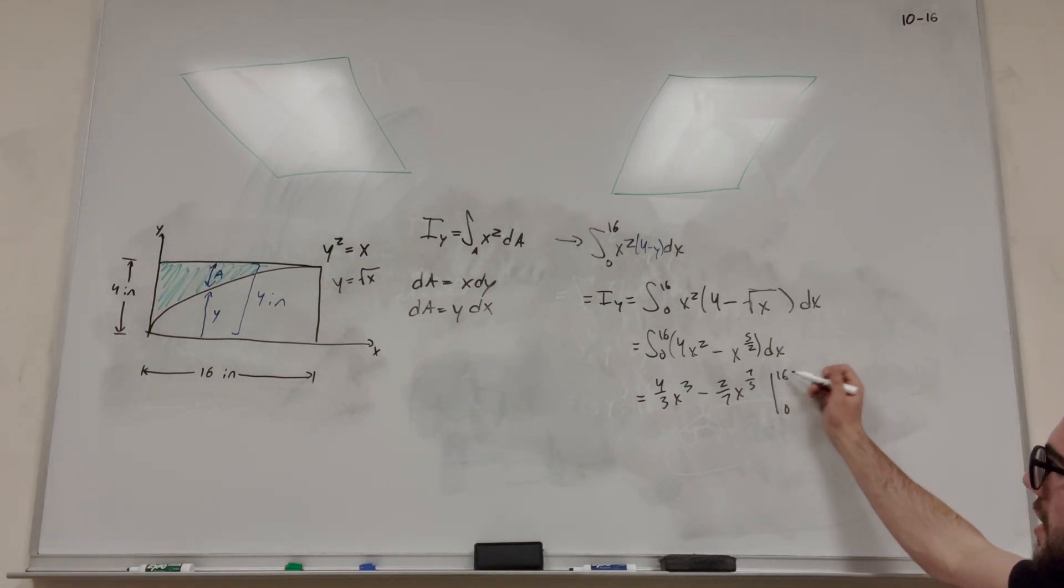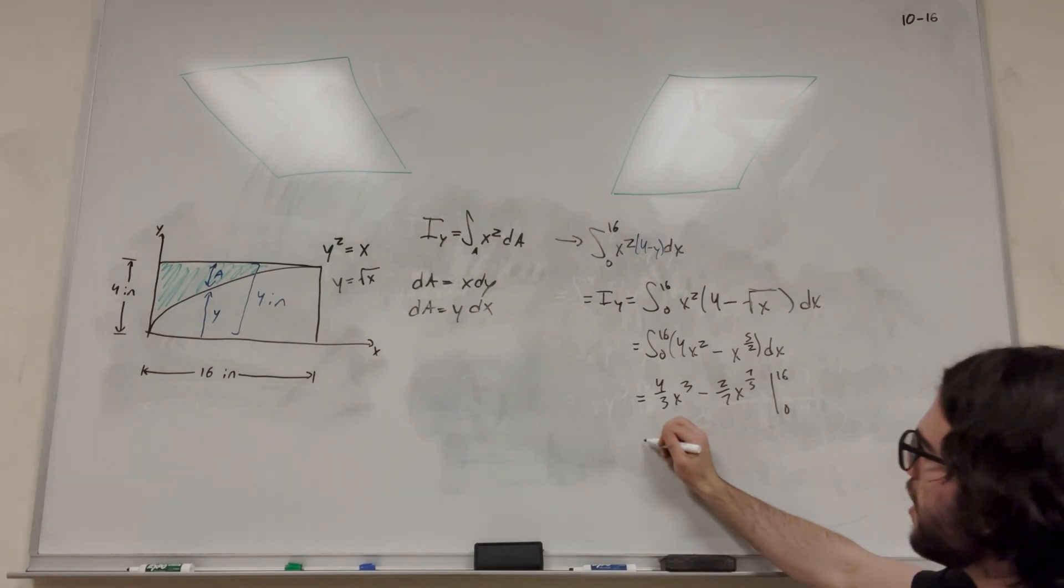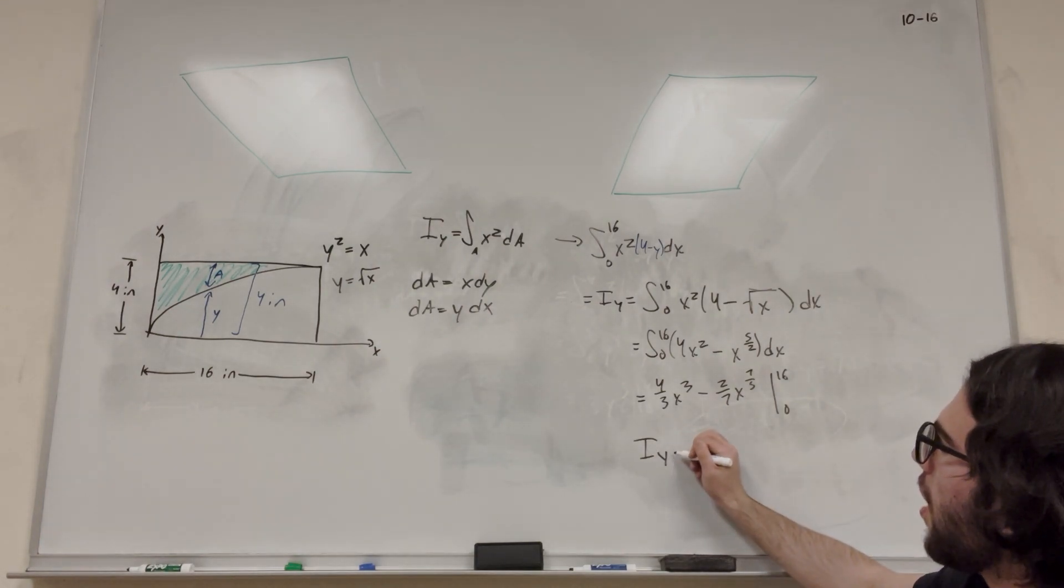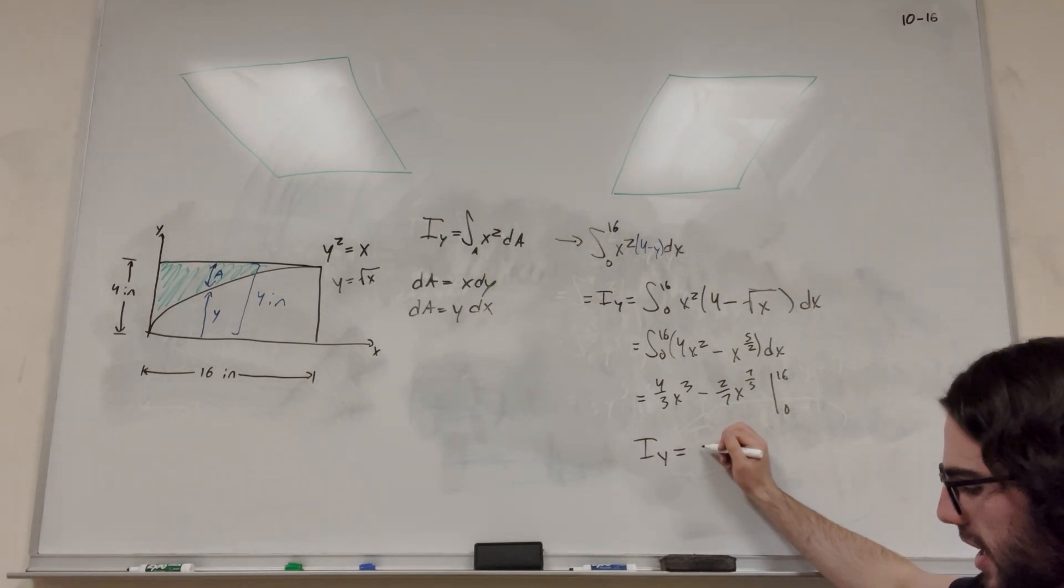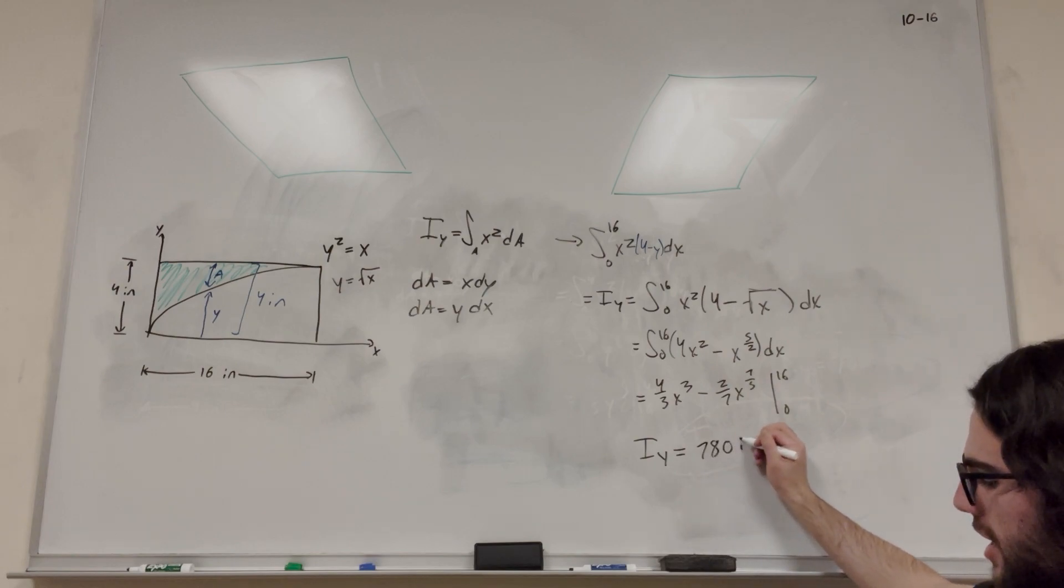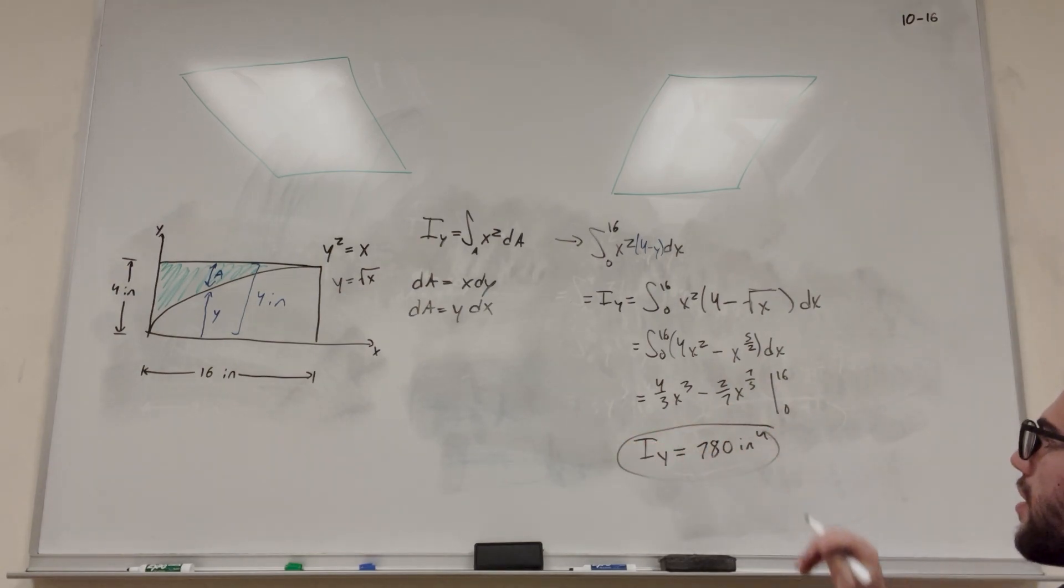Plug in 16 for each of our x's here. If you plug in 0, you get 0. You'll find that the moment around the y-axis is 780 inches to the fourth.